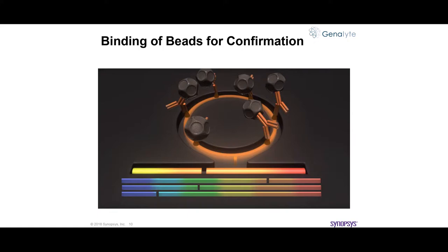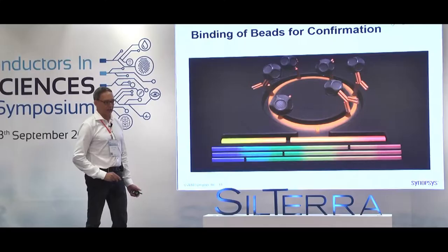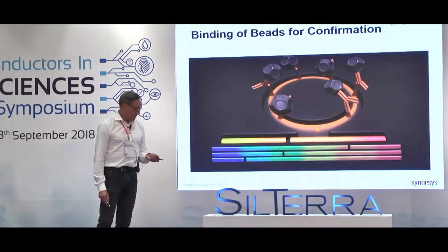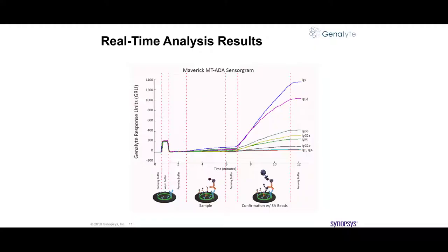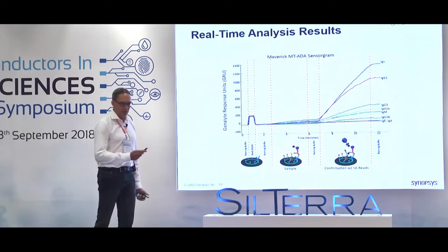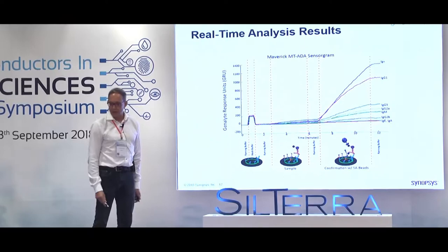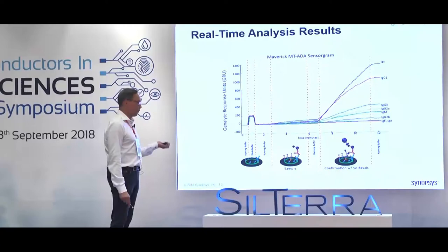Normally the analytes give a weak signal, so you can add beads that bind to the analyte, adding more mass to the ring and giving an even higher frequency shift. If you monitor this real-time frequency shift, you get a signal from all your sensors, and the frequency shift is directly proportional to the concentration of the analytes. This whole test only takes 15 minutes — in 15 minutes you are analyzing 32 different analytes.